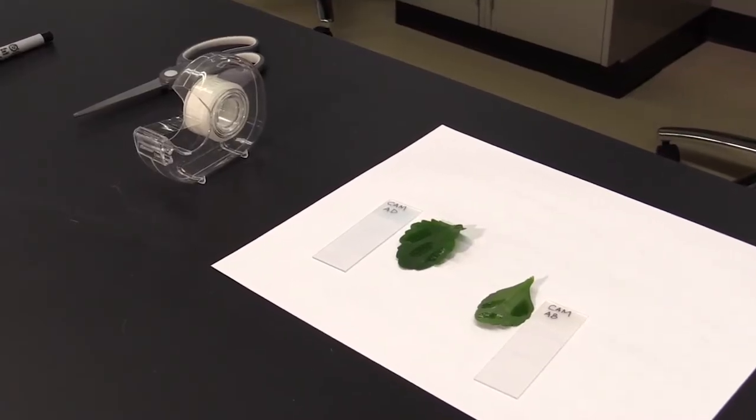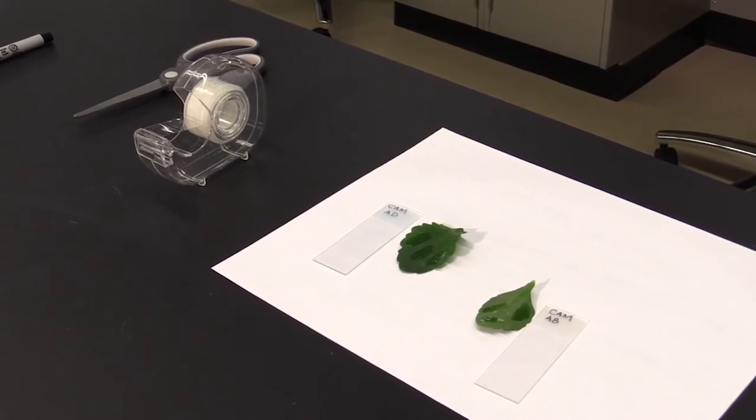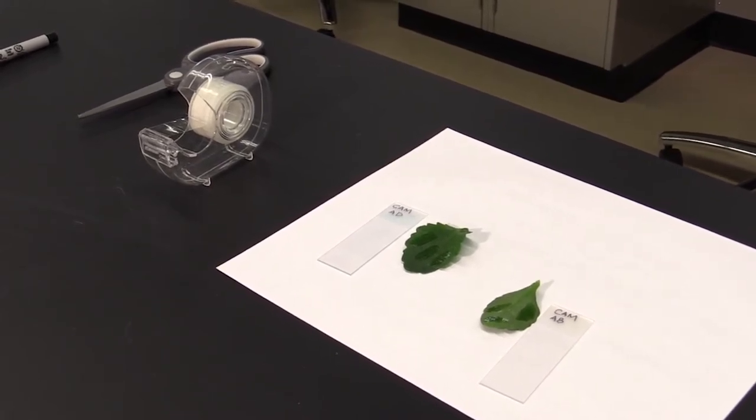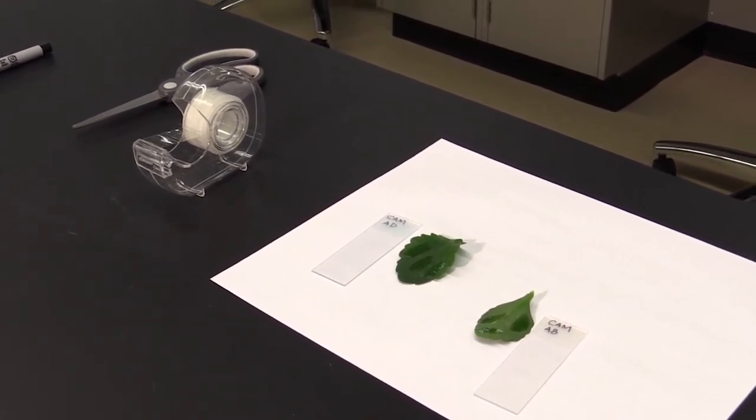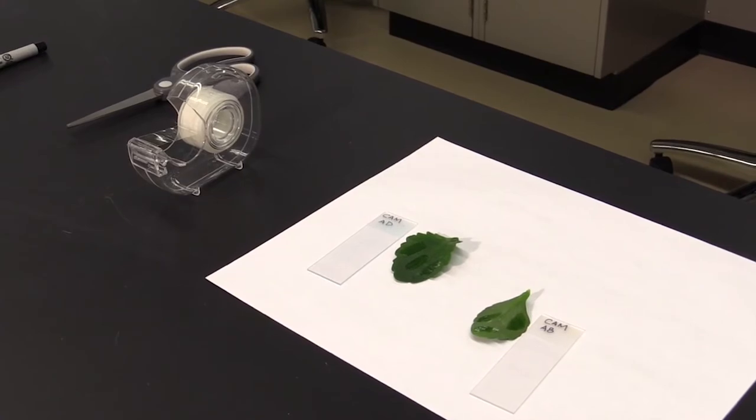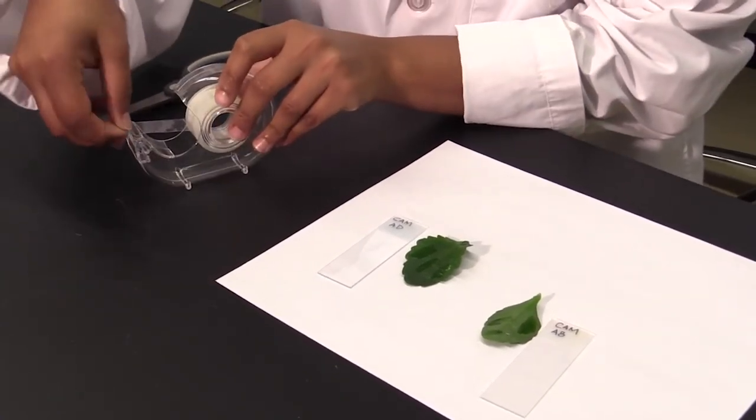For the next step in Part C, it is crucial that the three patches of nail polish that you applied both to the ab-axial and ad-axial leaf surfaces are completely dry. When the peel is dry, cut a small piece of tape with scissors.